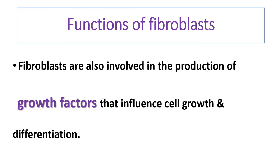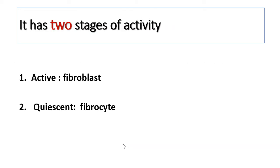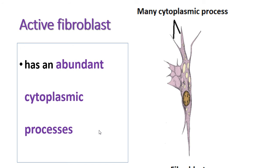Fibroblasts are also involved in the production of growth factors that influence cell growth and differentiation. There are two stages of the fibroblast: the active stage, known as the fibroblast, and the inactive stage, known as the fibrocyte.